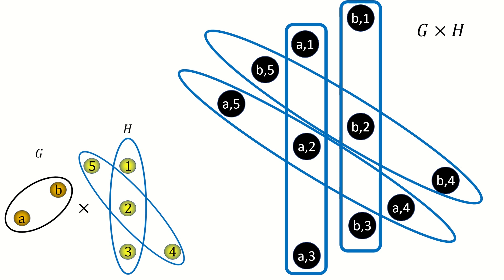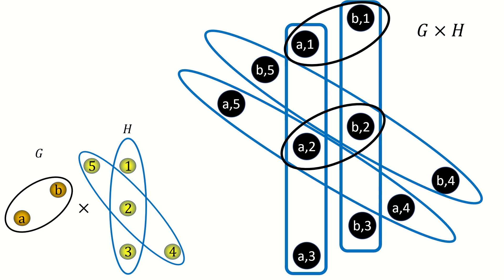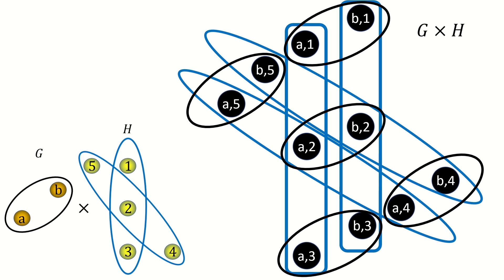Now let's find all the edges of the second kind, whose right coordinates are the same and whose left coordinates form an edge. In this case, there's just one edge in the left factor graph. So we're looking for sets of edges whose right coordinates are the same and whose left coordinates are A and B. Fixing the right coordinate to be 1, we get the edge A1, B1; and fixing the right coordinate to be 2, we get the edge A2, B2. Can you finish the product from here? Continuing in this way, we get three more edges. This is the finished product of our hypergraphs.